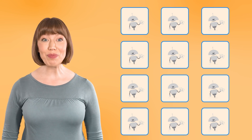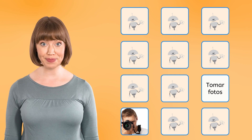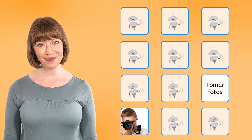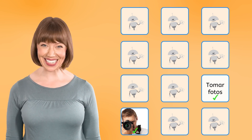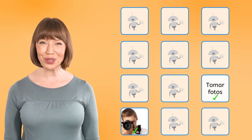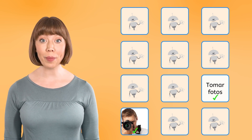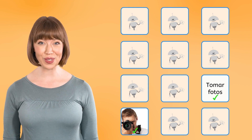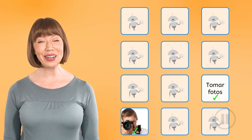For the first activity, we have this photo and the words tomar fotos. Use your knowledge of cognates and tell me if we have a match. Yes, we have a match. Tomar fotos is how you describe what the person in the image is doing with the camera. Say tomar fotos with me: Tomar fotos. Now, write it down.